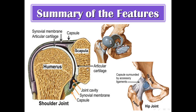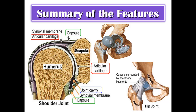Summary of the features of the synovial joint: the articular surface is covered by hyaline cartilage. There is a joint cavity between the two bones. The two bones are connected by a capsule, which is supported from outside by accessory ligaments, and lined from inside by a synovial membrane which secretes synovial fluid.